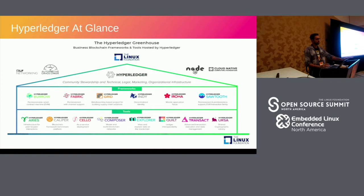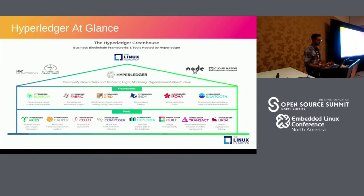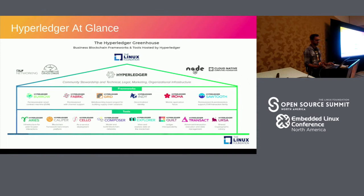We are going to use Hyperledger Fabric in ONAP. The Hyperledger project includes frameworks such as Burrow, Hyperledger Fabric, Grid, and Iroha. It also provides tools like Caliper — a performance measurement tool — as well as Cello and Composer, which run on top of Hyperledger Fabric. It also provides Explorer and Quilt. We will use Hyperledger Fabric as the single domain orchestrator.